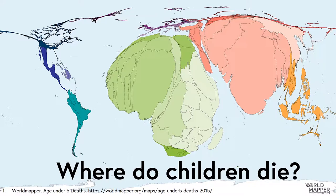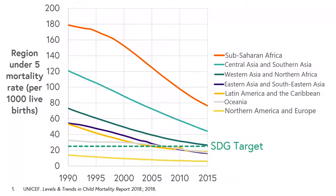This leads us to the next part of our question: where do children die? This map of the world shows the size of each country relative to the absolute number of deaths of children under 5 in 2015. The majority of child deaths are now in Sub-Saharan Africa, Southern Asia and East Asia. Looking at trends over time for different regions, the rates of child mortality have been and continue to be vastly divergent. The green dotted line shows the SDG target under-5 mortality rate of 25. Large parts of the world have already reached the target, but progress needs to be made in Central and Southern Asia and in Sub-Saharan Africa.